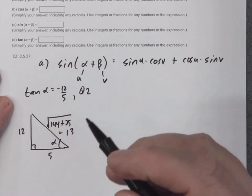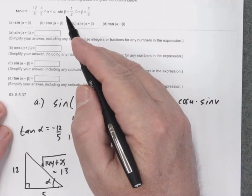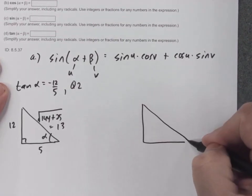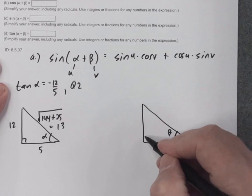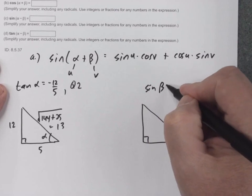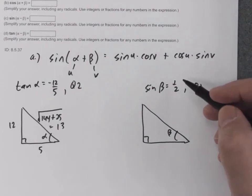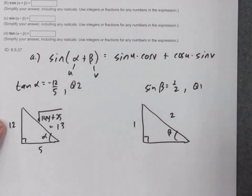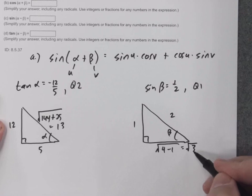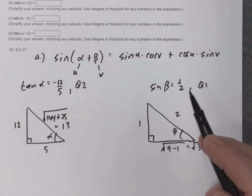Now I'll do the same thing for beta. They say the sine of beta equals one half and it's in quadrant 1. Sine is SOH — opposite over hypotenuse. The adjacent side is going to be the square root of 4 minus 1, which is the square root of 3. So now I've got two triangles: one that represents alpha and one that represents beta.